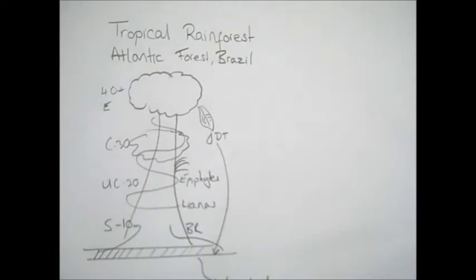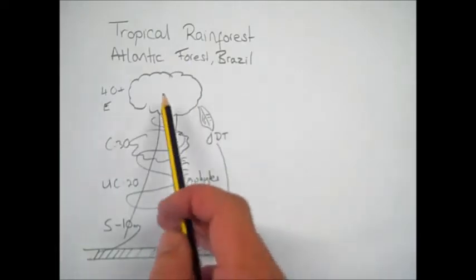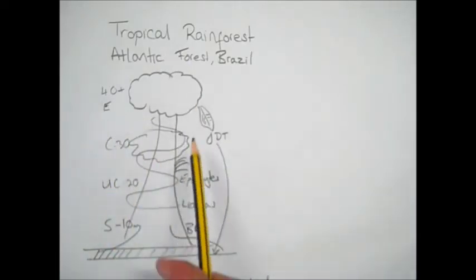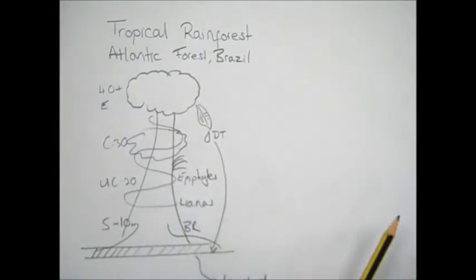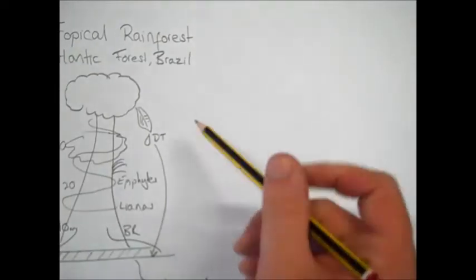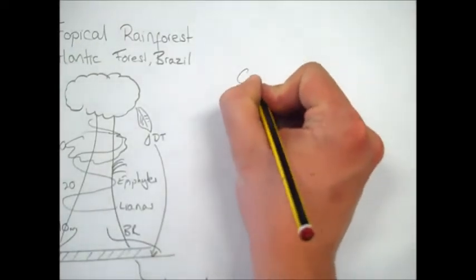The second half of our tropical rainforest case study moves away from looking at the adaptations, such as the buttress roots and the drip tip leaves, to looking at causes and then management of deforestation. So if we just move over slightly, we start off looking at the causes.